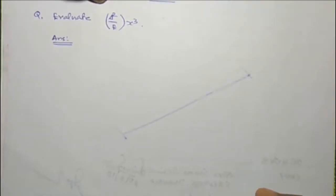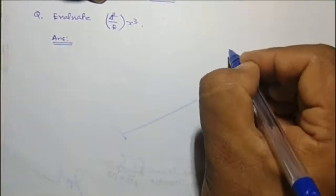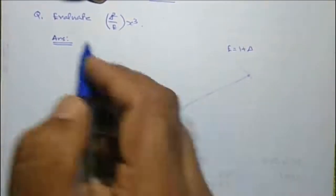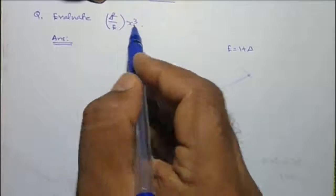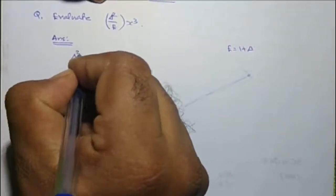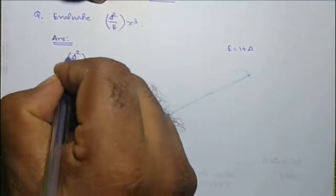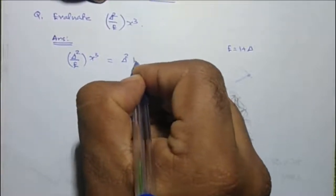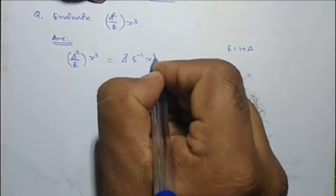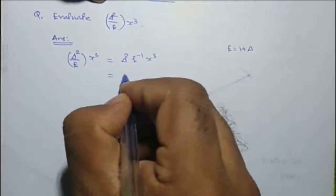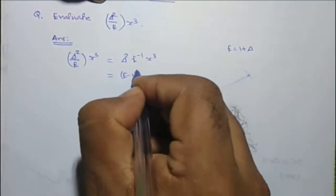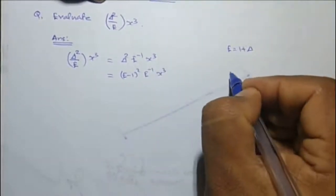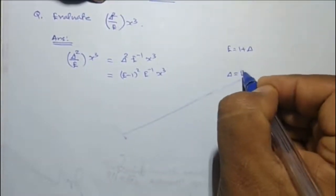Let us do a problem using the identity E equals 1 plus delta. Evaluate delta squared divided by E of x cubed. This can be written as delta squared into E raised to minus 1 of x cubed, which equals E minus 1 squared into E raised to minus 1 of x cubed, since delta equals E minus 1.